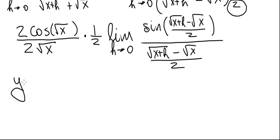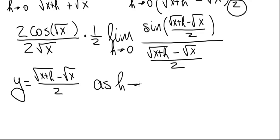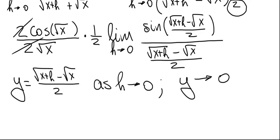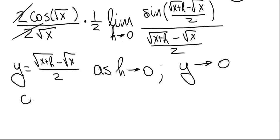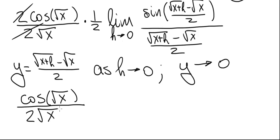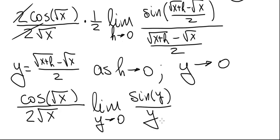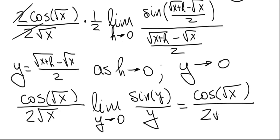We make the substitution y = (√(x+h) − √x)/2. As h approaches zero, √(x+h) → √x, so y → 0. The two's cancel in the sine argument and denominator, and we get cosine(√x) over 2√x times the limit as y goes to zero of sin(y)/y. That limit equals 1, so the final answer is cos(√x) divided by 2√x.